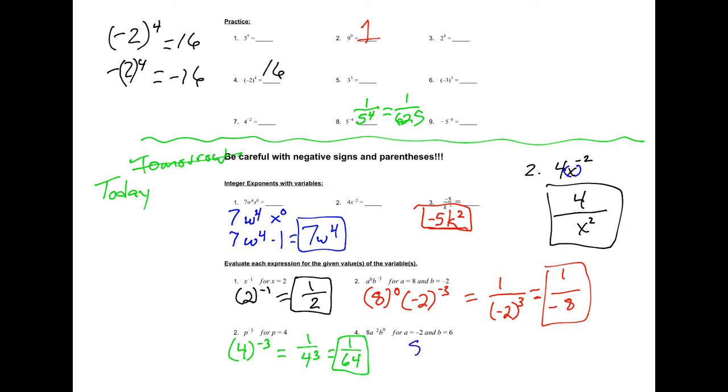And last but not least, 8(-2)^-2 and then 6 to the 0. 8 just going to stay 8, remember there's no exponent that's actually touching the 8, it's not part of a base. Negative 2 to the negative 2, that exponent is going to flip the fraction. So actually let's write it over here, so 8 on top, that negative 2 is going to flip down to the bottom.